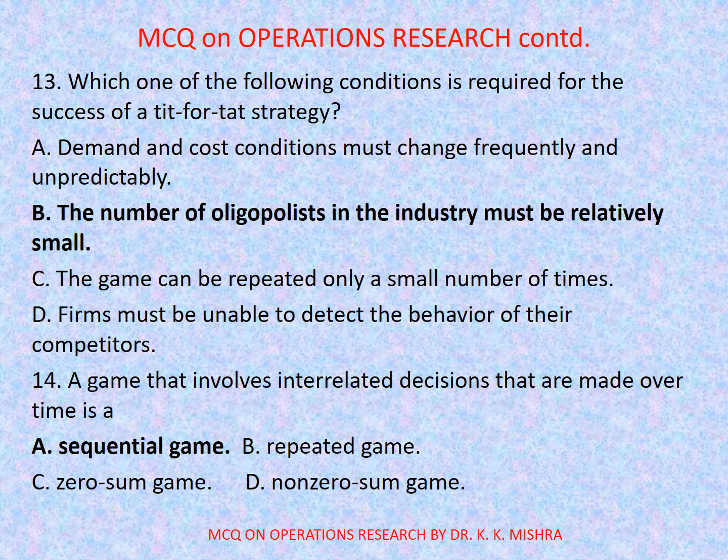Question number 13: Which one of the following conditions is required for the success of a tit-for-tat strategy? Options are: a) demand and cost conditions must change frequently and unpredictably, b) the number of oligopolists in the industry must be relatively small, c) the game can be repeated only a small number of times, d) firms must be unable to detect the behavior of their competitors. Correct option is b) the number of oligopolists in the industry must be relatively small.